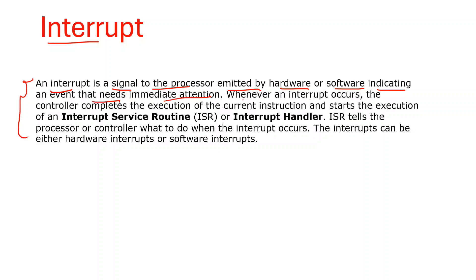Whenever an interrupt occurs, the controller completes the execution of the current instruction and starts executing the interrupt service routine, also called the interrupt handler. Whenever the interrupt occurs, our processor stops the current program execution and jumps to the interrupt handler. The interrupt handler is a function which executes after the interrupt occurs. ISR tells the processor or controller what to do when the interrupt occurs.